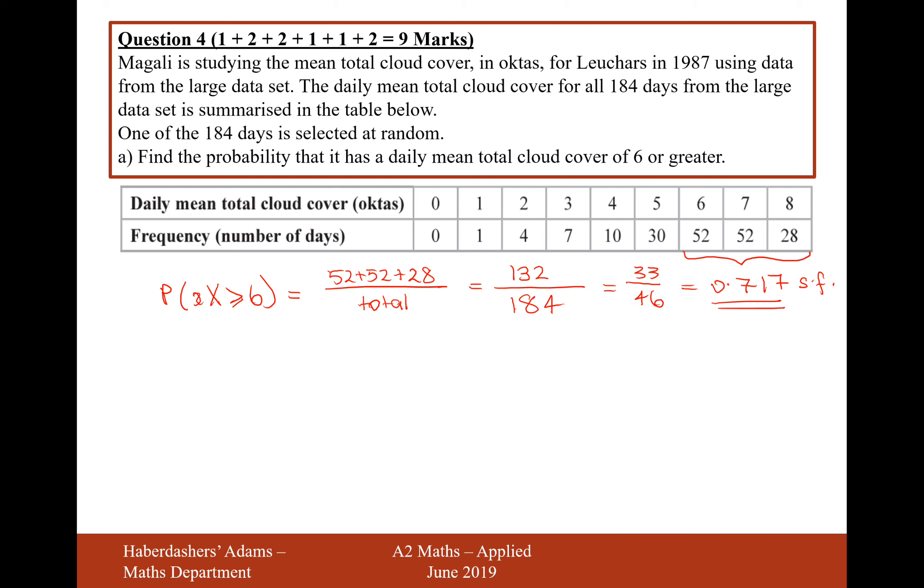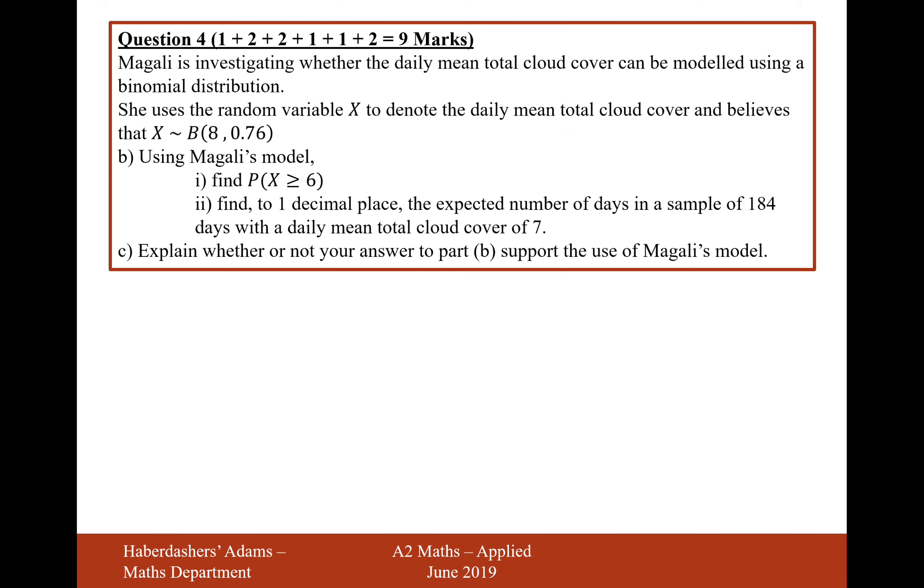Moving on. Magali is investigating. She uses the random variable x to denote the daily mean total cloud cover and believes that x is binomially distributed with 8 trials with the probability of each success being 0.76. Using Magali's model finds the probability of x being greater than or equal to 6.